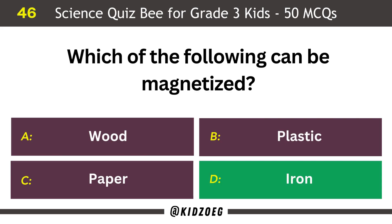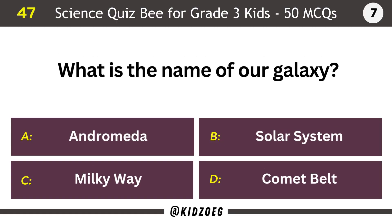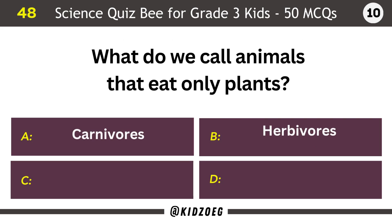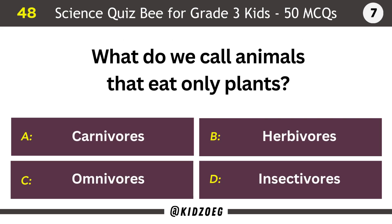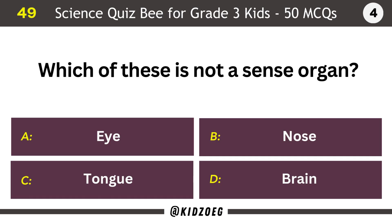Which of the following can be magnetized? Iron. What is the name of our galaxy? Milky Way. What do we call animals that eat only plants? Herbivores. Which of these is not a sense organ? Brain.